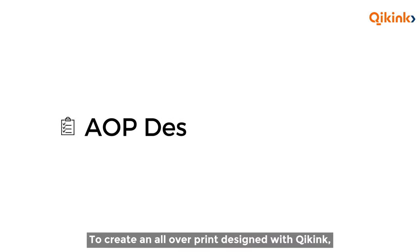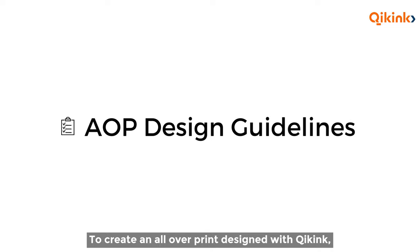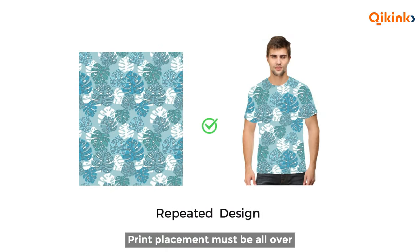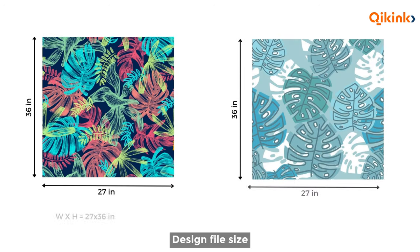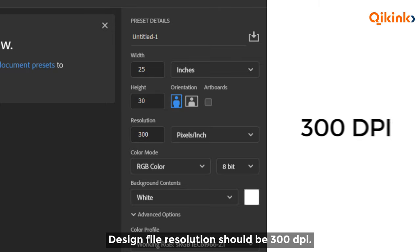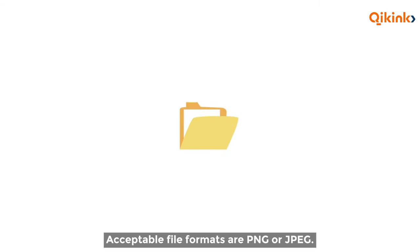To create an all-over print design with Quikink, follow these steps. Print placement must be all-over and repeated pattern designs only. Design file size width and height should be 27 x 36 inches. Design file resolution should be 300 dpi. Acceptable file formats are PNG or JPEG.